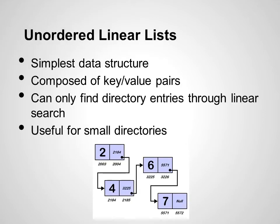The first data structure we're covering is unordered linear lists. Unordered linear lists are the simplest used data structure. They are still commonly used for simple and small directories, primarily in the Unix family file systems, but are inefficient for large amounts of data. Linear lists are composed of unordered key-value pairs, and entries into these lists can only be found through a linear search. This format makes linear lists suitable for small directories, but in large directories this method becomes inefficient and other data structures are used.